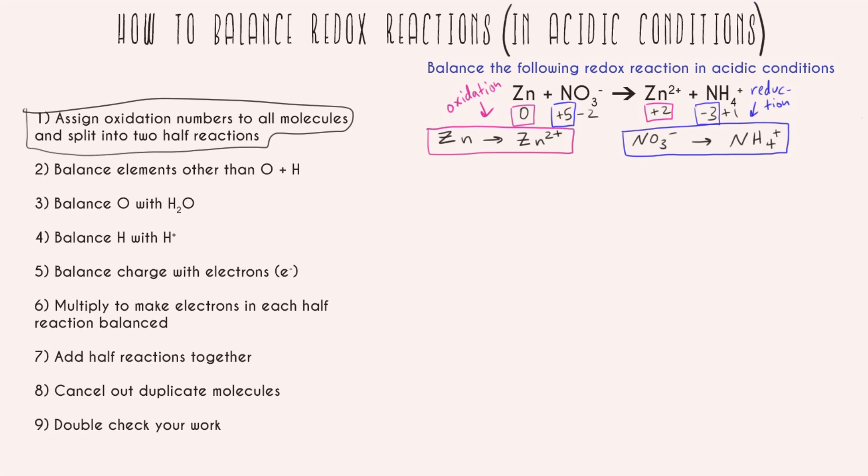All right, so now step two. I'm going to balance all the other elements that are not oxygen or hydrogen. So in this case I actually don't have to do anything because zinc is already balanced with one and one, and nitrogen is already balanced also having one nitrogen on both sides.